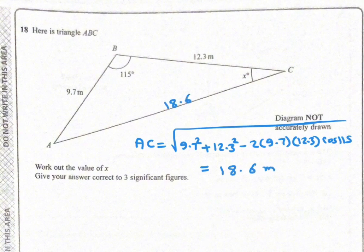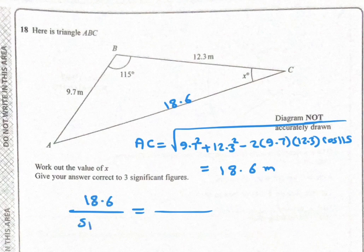Now use sine rule to find X. 18.6 over sine 115 equals 9.7 over sine X.